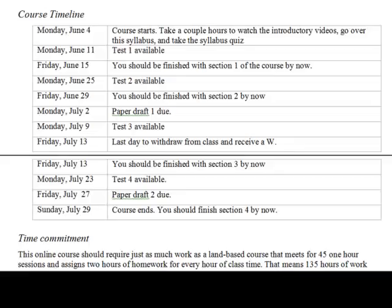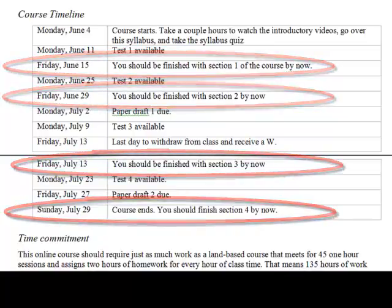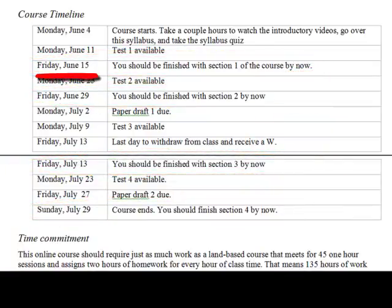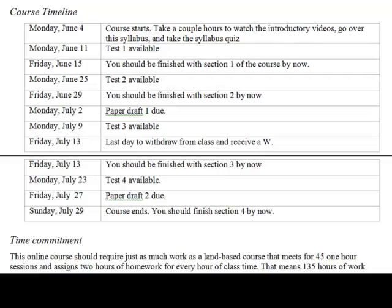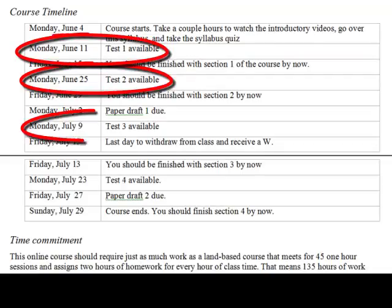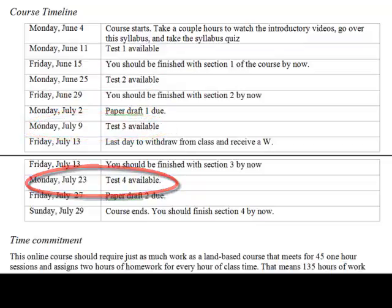We'll talk more about those concepts in video two. In the meantime, you should just see that there are due dates where you should expect to finish each section. You should be finished with section 1 by June 15th, section 2 by June 29th, section 3 by July 13th, and section 4 by July 27th. When I say you should have a certain section done by a certain date, that is just a guideline — no material in that section will be closed off. The list also has the dates the tests will become available; you can take the tests any time up until the end of the course.